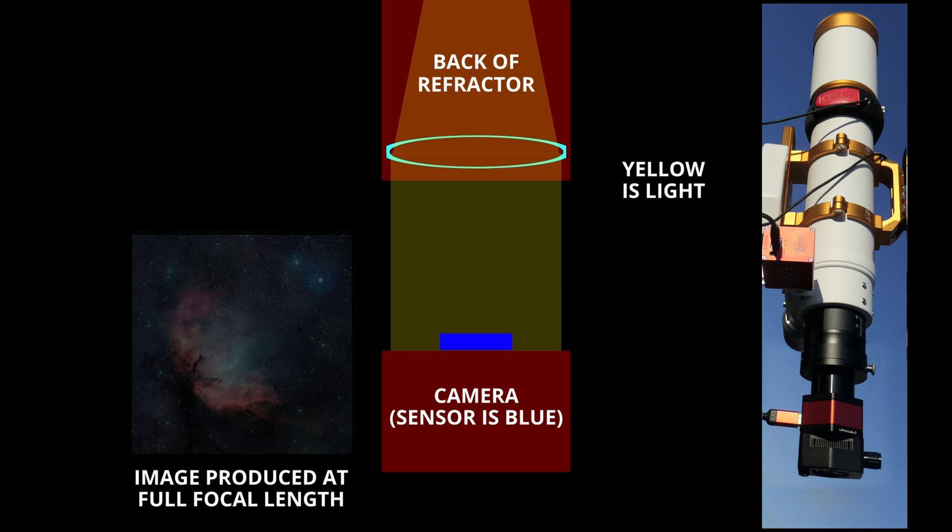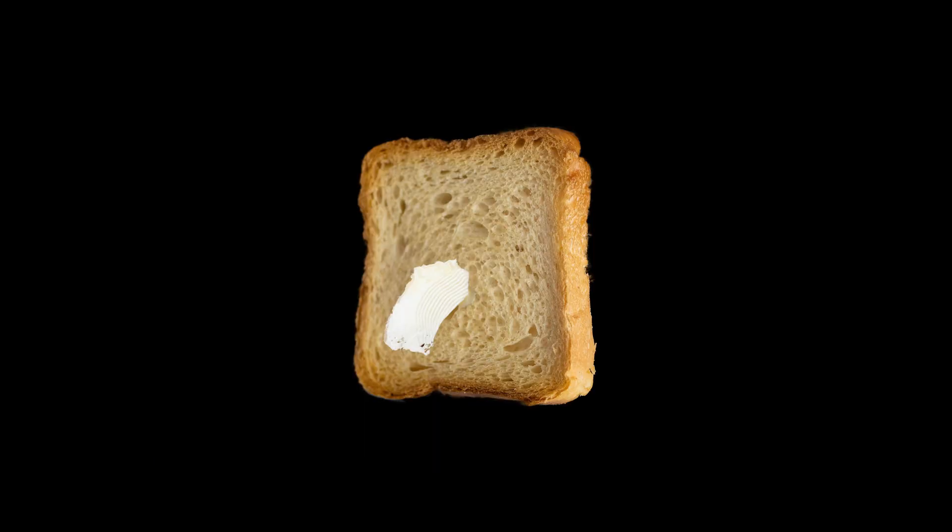Focal length essentially spreads out the light, and the longer the focal length, the more it's spread out. If you saw my video understanding focal length, trading speed for detail, you would have seen me use the analogy of butter and toast to explain what happens to light when it's spread out by focal length. It goes like this.